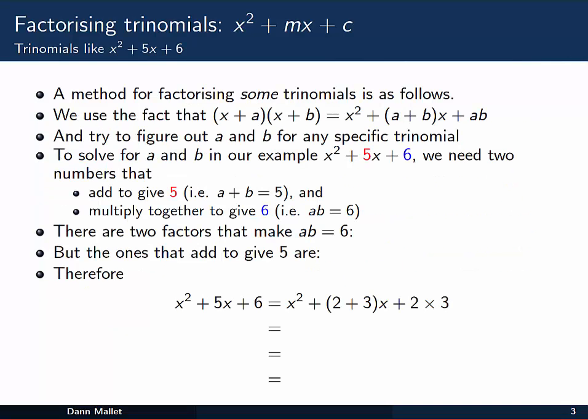One method that we can use to go about this for factorising certain trinomials is as follows. We use the fact that (x + a)(x + b) expands to this form, x² + (a + b)x + ab, to get us from this point back to the factored form. So the problem that we are left with is figuring out what these numbers a and b are for any specific trinomial that we are given.